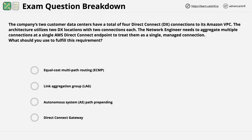Equal cost multi-path, or ECMP, is a network feature that allows traffic for the same session or flow to go through multiple different paths of equal cost. It's a mechanism that allows load balancing and increased bandwidth. That's what ECMP does.